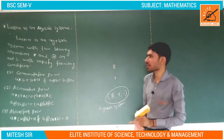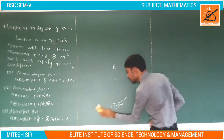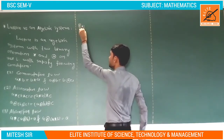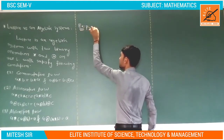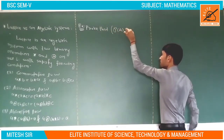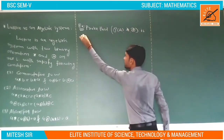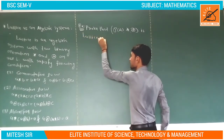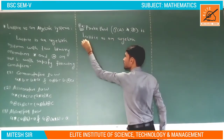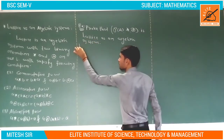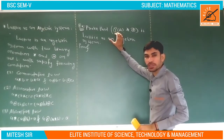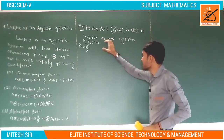Now we take an example so you better understand the lattice algebraic system. The example is: prove that the power set of A with the two binary operations star and ringsum is a lattice as an algebraic system.